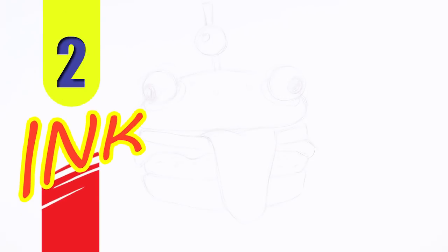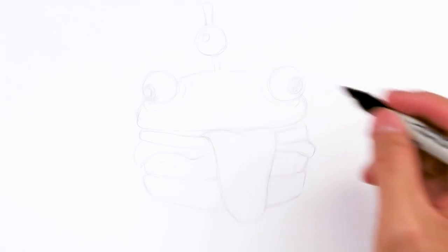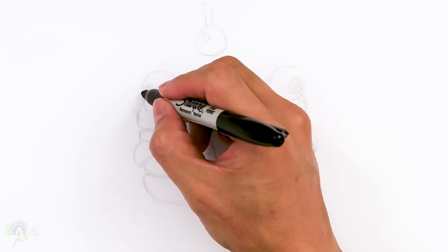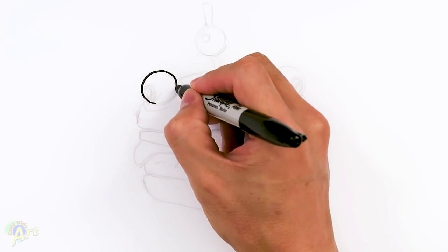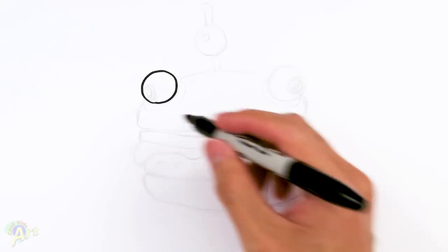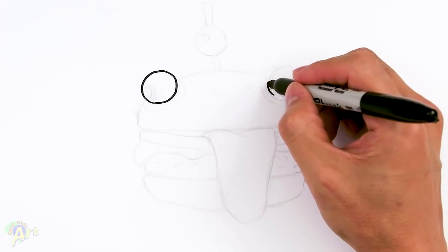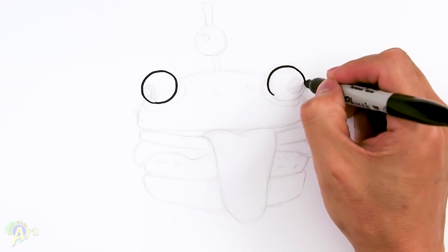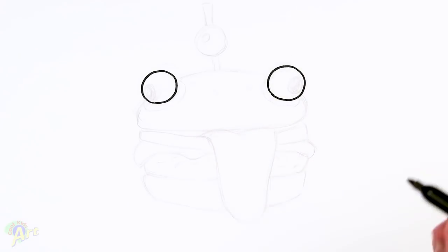All right, so let's draw this burger and it's actually gonna be really easy to draw. So we're just gonna start out with his eyes, so we're gonna draw two circles, so we're just gonna draw one and then another one pretty far apart.